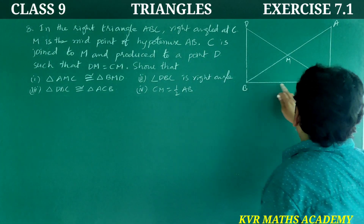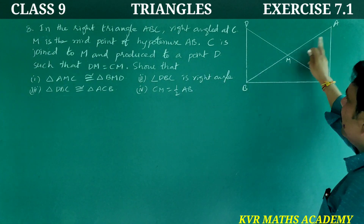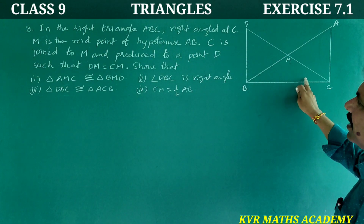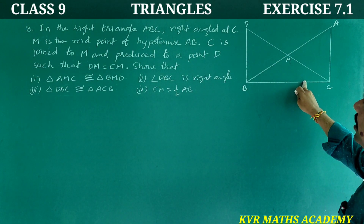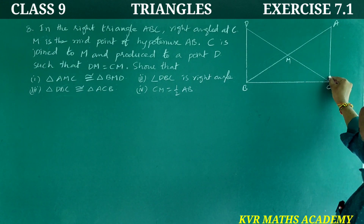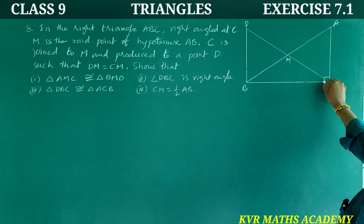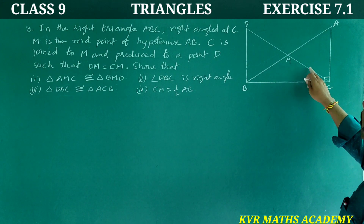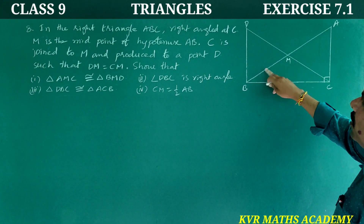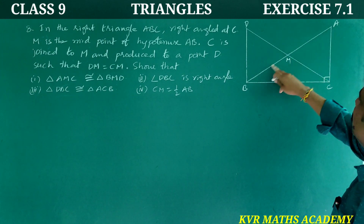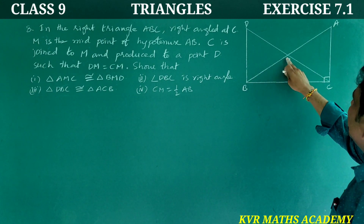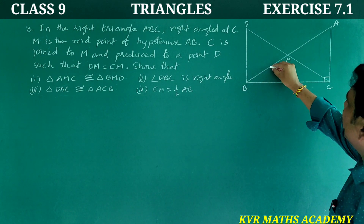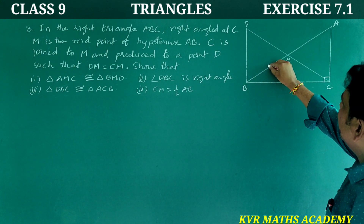Show that: (A) triangle AMC is congruent to triangle BMD, (B) angle DBC is a right angle, (C) triangle DBC is congruent to triangle ACB, and (D) CM is equal to half AB.